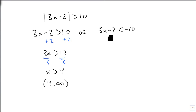When we add 2 to our second inequality, though, we get 3x is less than minus 8, divide by 3, and x is less than minus 8 thirds,